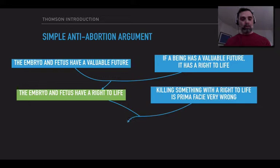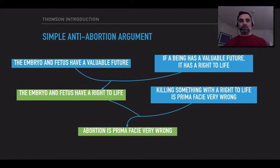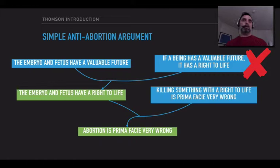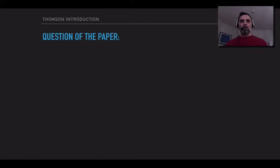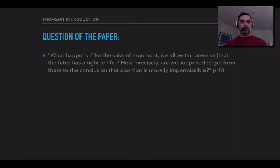In the previous module, what we saw is that perhaps Marquis is wrong about this part of his claim. It's not clear that if a being has a valuable future, it has a right to life. We saw that it's plausible that things like the ovum and perhaps the sperm have valuable futures, and yet it's okay to prevent those valuable futures from coming to pass. But Thompson's going to take a different tack. She writes: what happens if, for the sake of argument, we allow the premise that the fetus has a right to life? I was suggesting that Marquis didn't establish that, but Thompson says let's suppose that he did establish that.